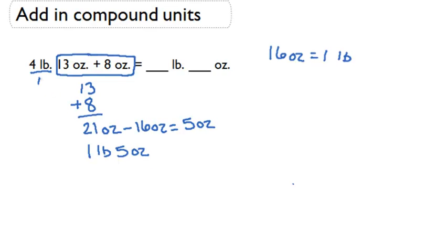Now let's bring down our 4 pounds. If we add 4 pounds to our 1 pound and 5 ounces, we're going to end up with 1 pound plus 4 pounds is 5 pounds. And we're going to simply bring down our 5 ounces. So we have 5 pounds and 5 ounces, that's what we can fill in as our answer.